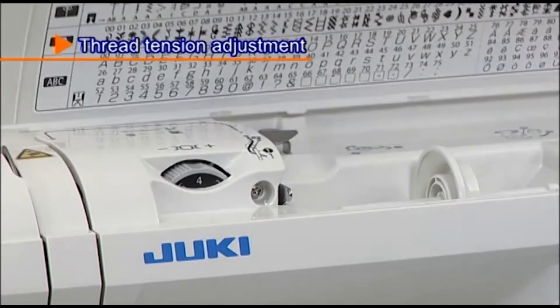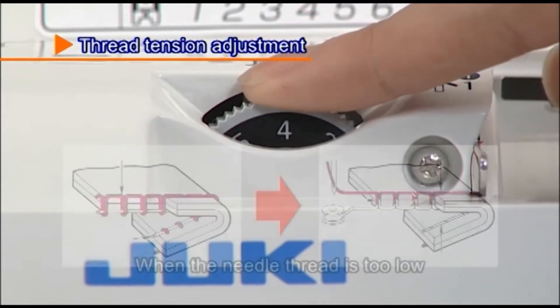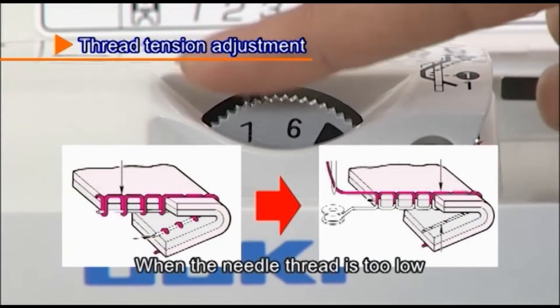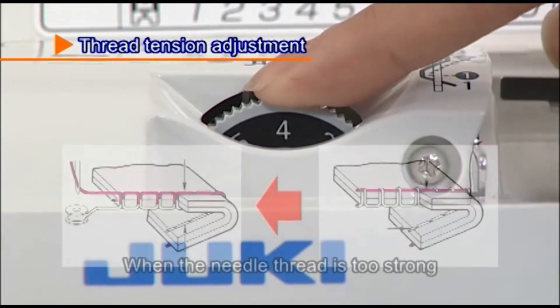In case the thread tension is not correctly set, adjust the tension by using the thread tension adjustment dial, which is located under the cover on top of the machine.